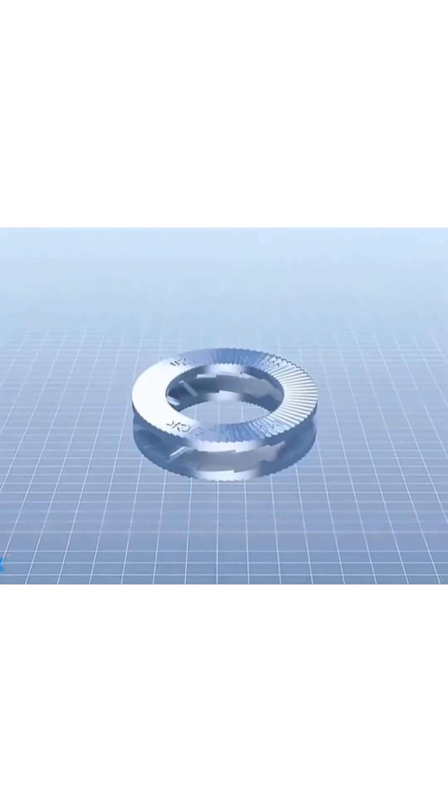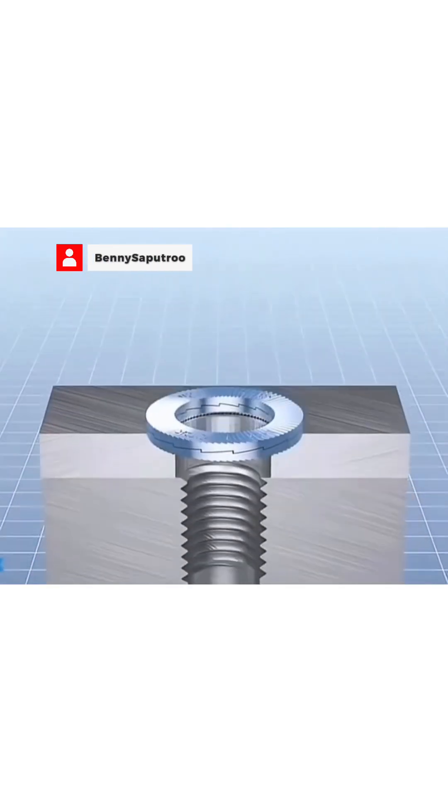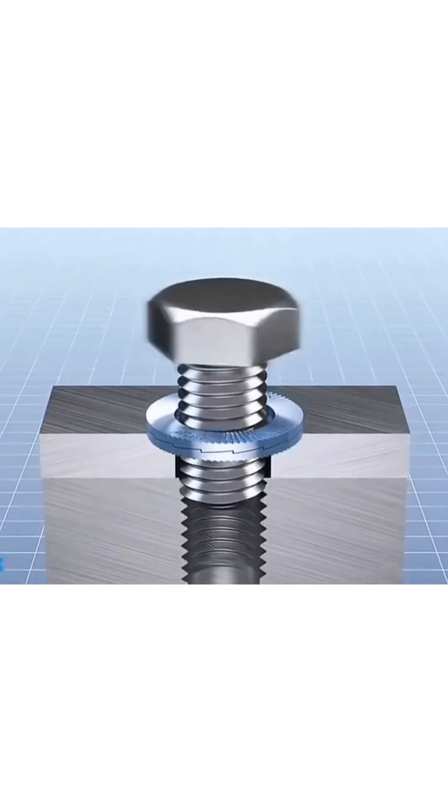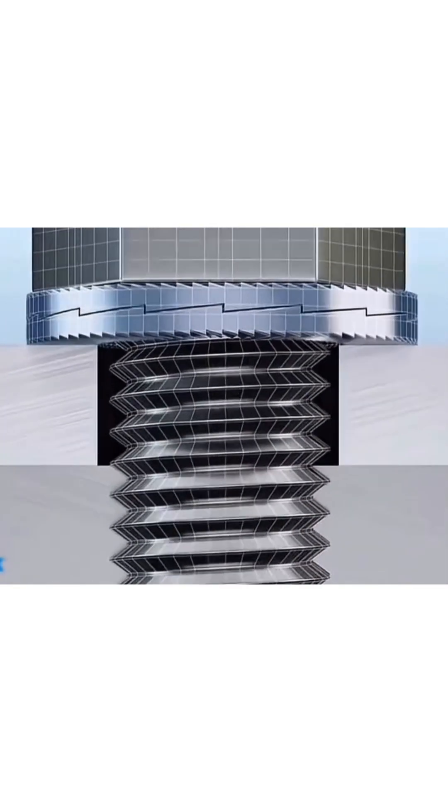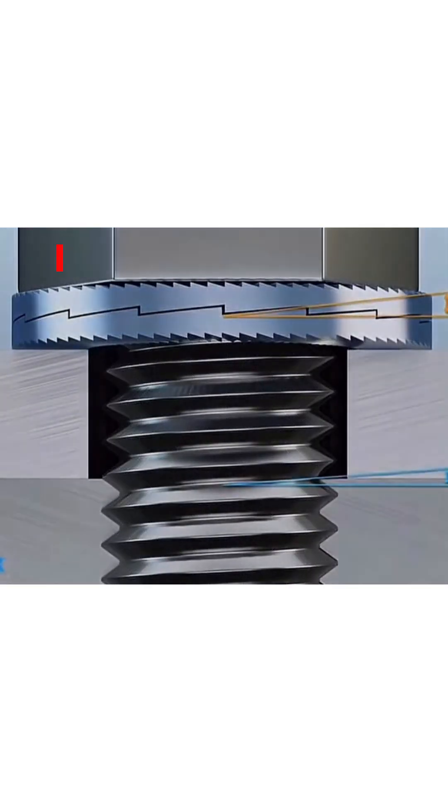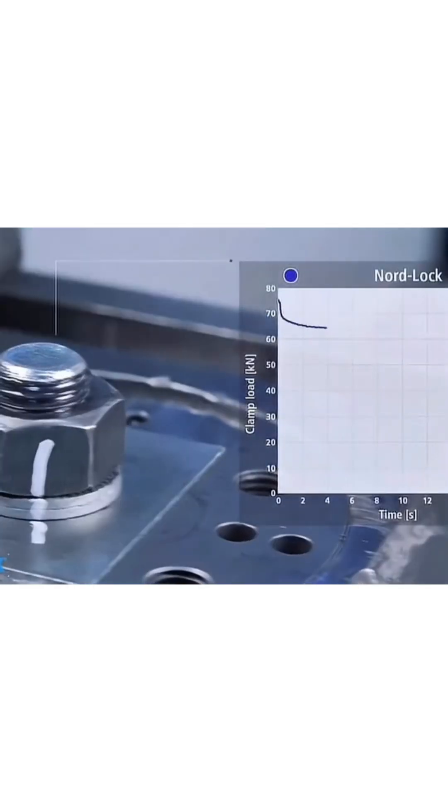But it's a completely different story with the wedge lock washer. This one doesn't rely on friction at all. It uses two plates that lock together like wedges, making it impossible for the bolt to rotate. When tested, the tension stays stable and consistent, even under extreme vibration.